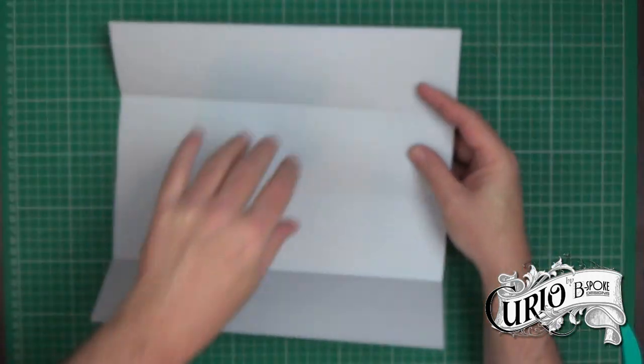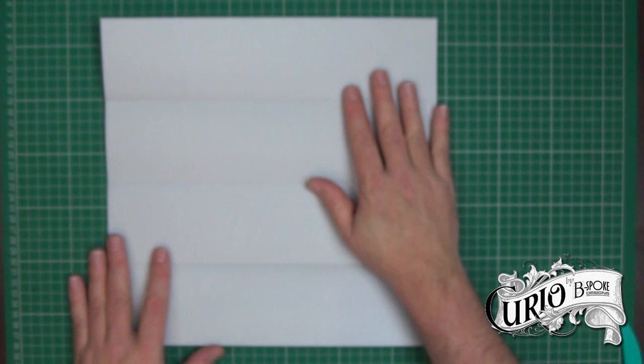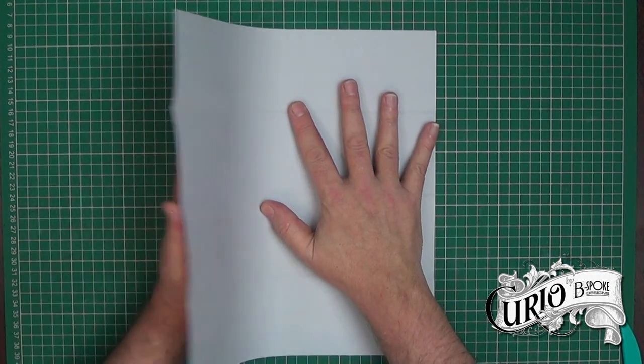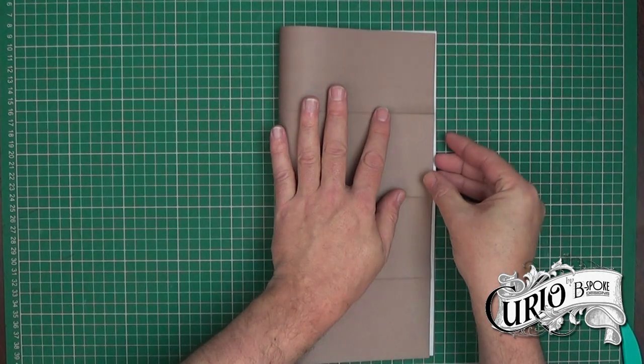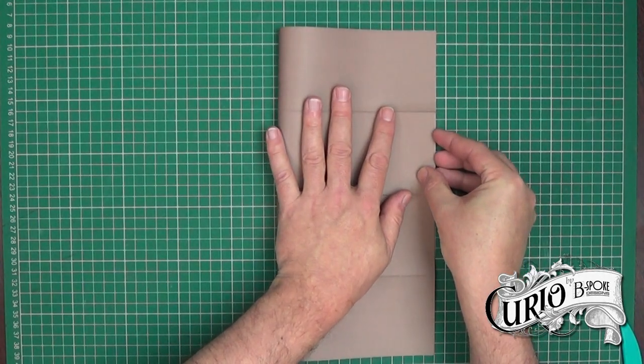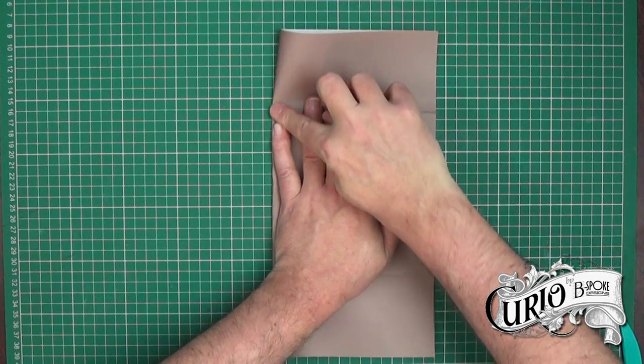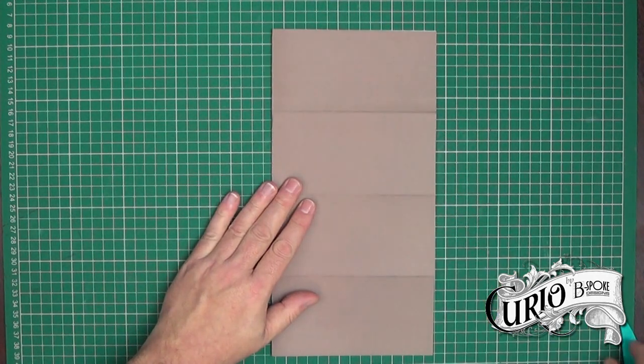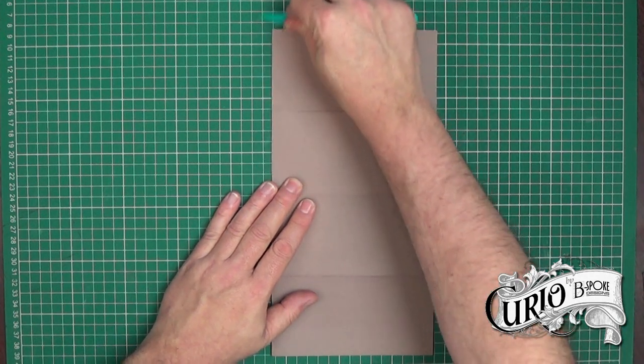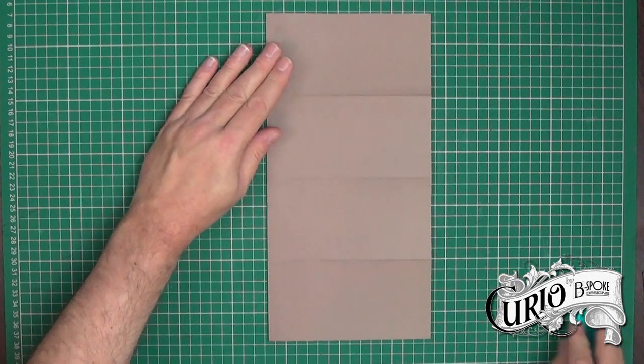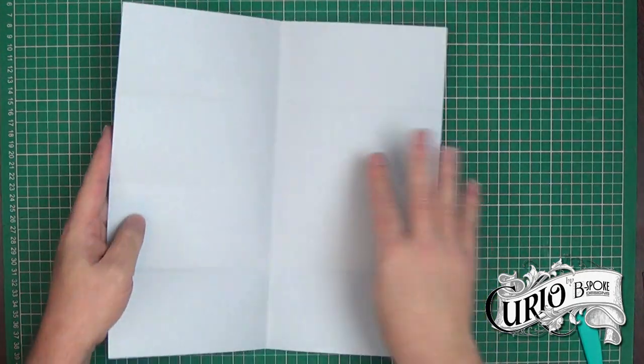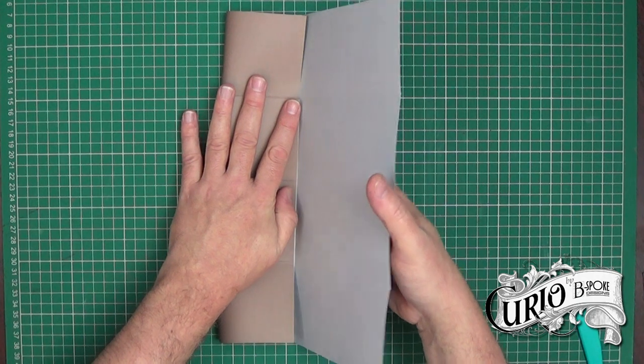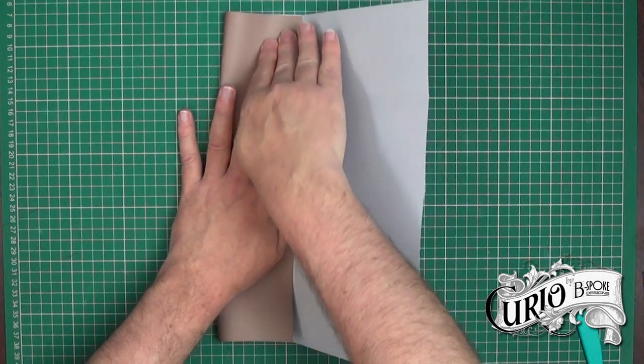So now we're going to turn the 12 by 12 piece round and we're going to repeat the process, reinforcing the folds with the bone folder.